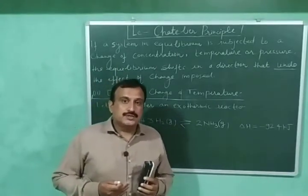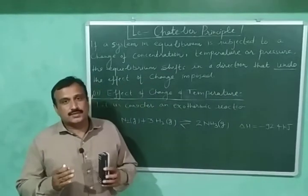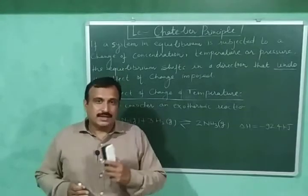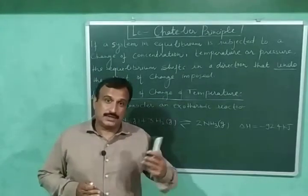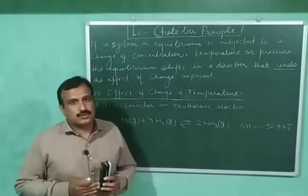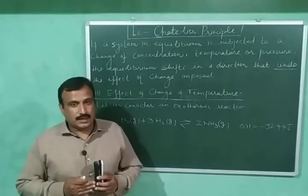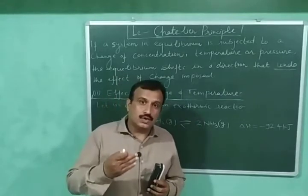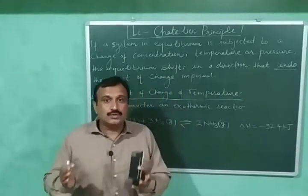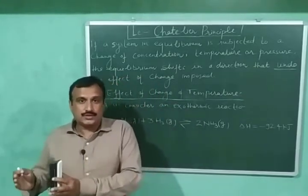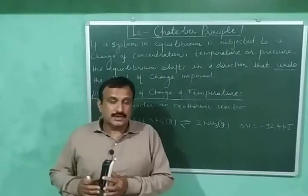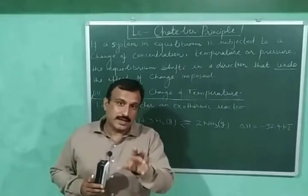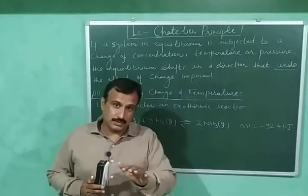So according to this principle, when a system in equilibrium is subjected to any change in concentration, temperature, or pressure, then the equilibrium shifts in the direction that undoes the effect of the change imposed. The meaning of the word 'undo' is reversal of a change. So the equilibrium will shift in the direction in which the effect of that change is reversed.